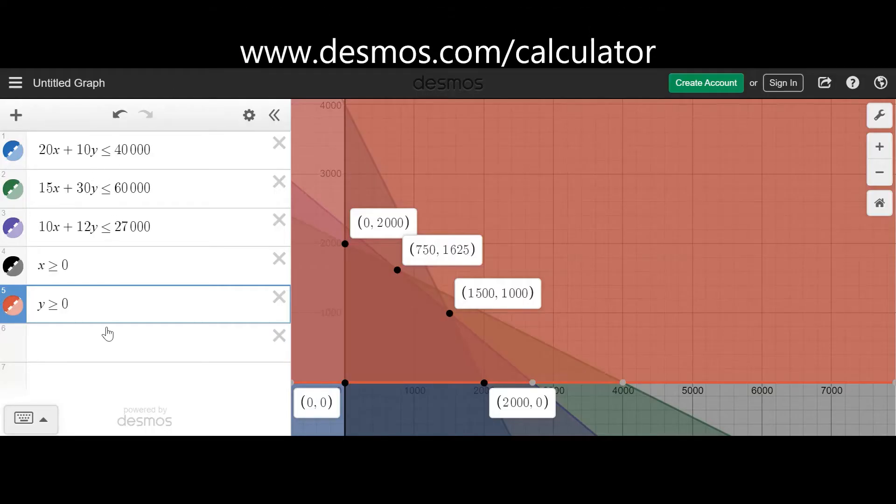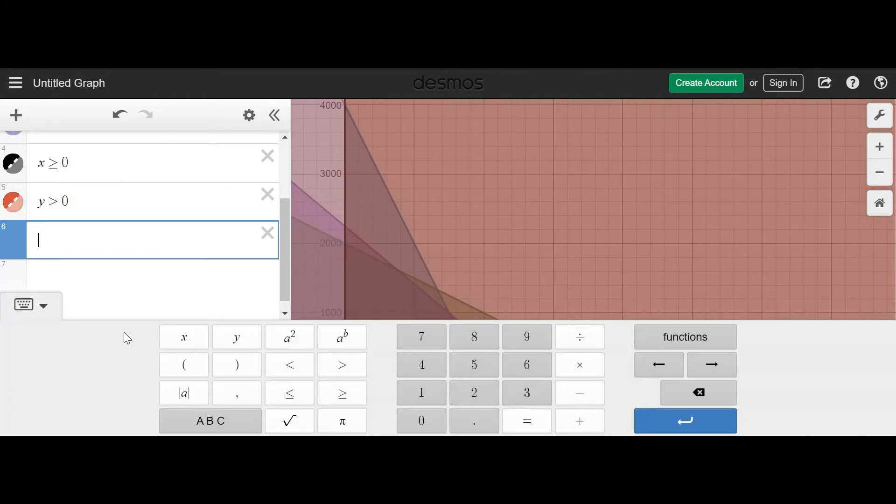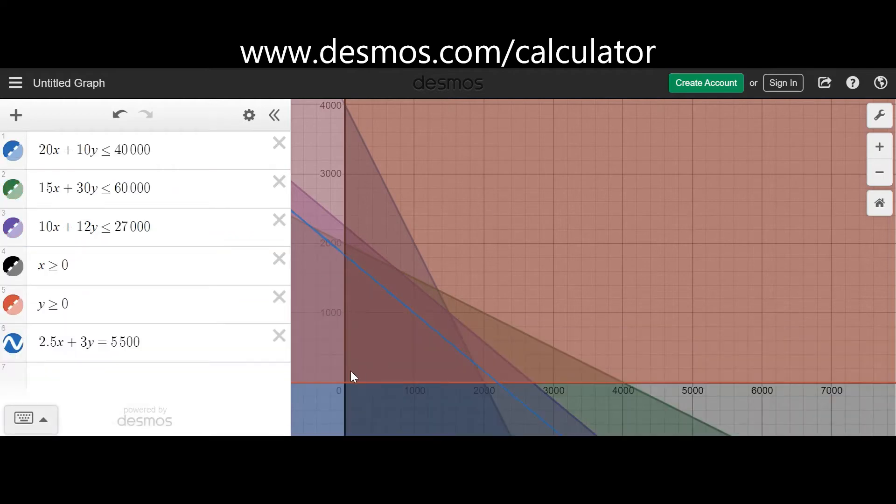On Desmos, once I've typed in equations, I will end up with the feasible region. What I will do next is type the new objective function, which was given by 2.5x plus 3y. We'll select an arbitrary random value, and we can use the profit that we had in the previous section, where we had about $5,500 of profit. Once I do that, you can see the blue line is drawn now.